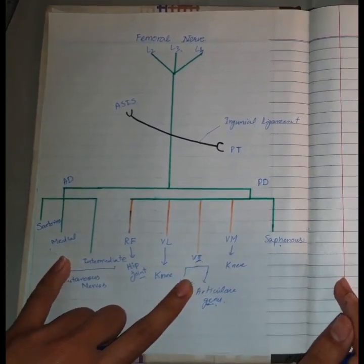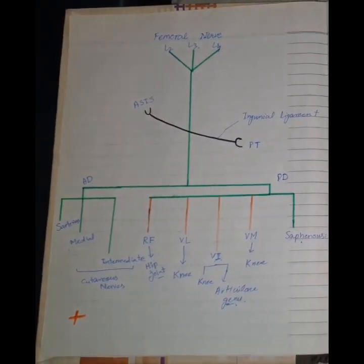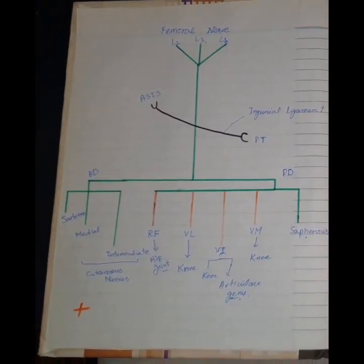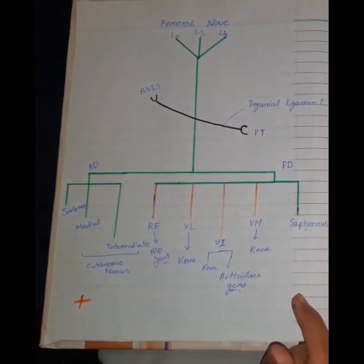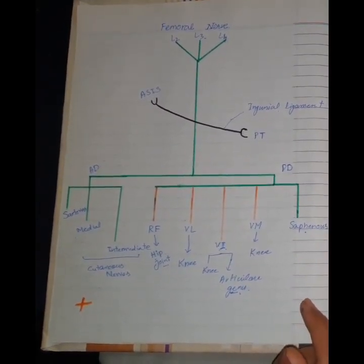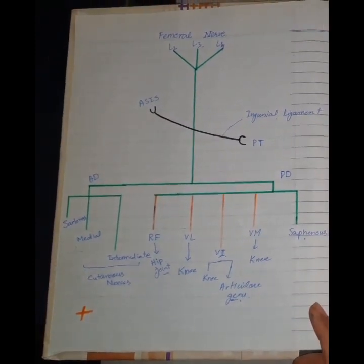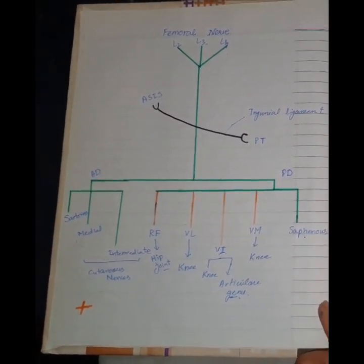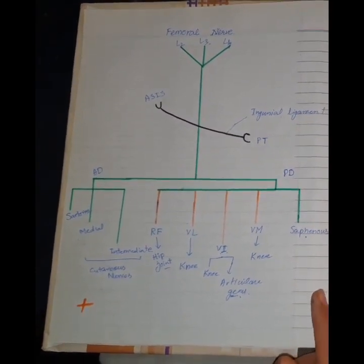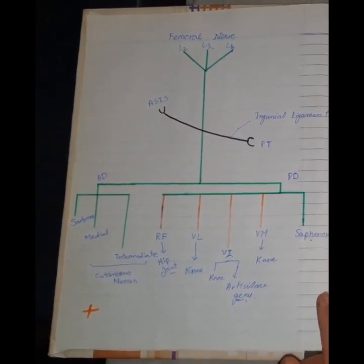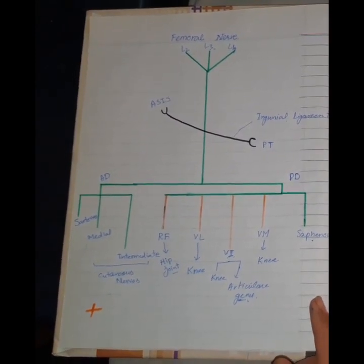Moving forward, what is the clinical importance? If the femoral nerve gets paralyzed, there is paralysis of the anterior compartment of the thigh along with cutaneous loss. And the saphenous nerve is also paralyzed, so the medial side of the leg till the big toe also loses cutaneous innervation.